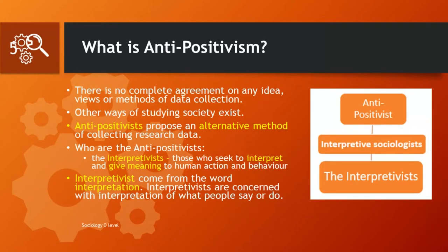What is anti-positivism? Anti means against. In other words, sociologists who believe that we cannot study human behaviour by using the methods of natural science are anti-positivists. They propose an alternative method which seeks to understand and interpret the meanings behind human action. The interpretivist, as the name suggests, comes from the word interpret — to give meaning to human action and behaviour.